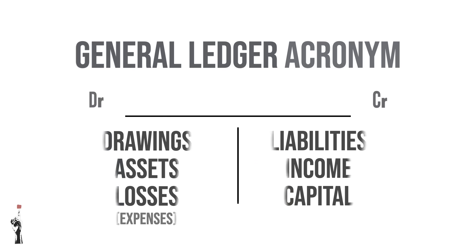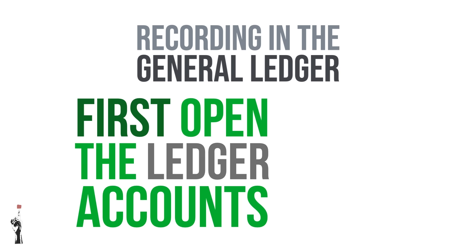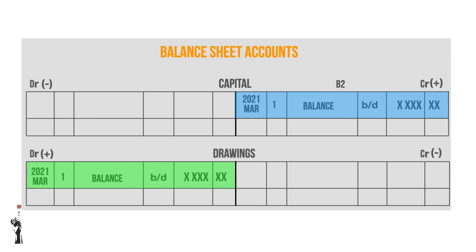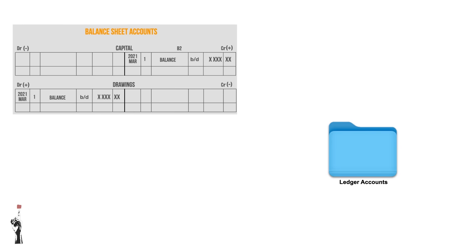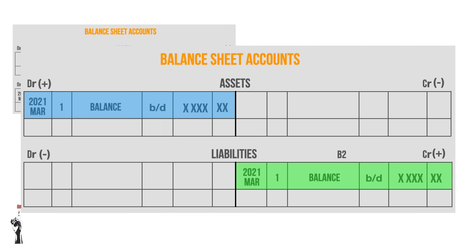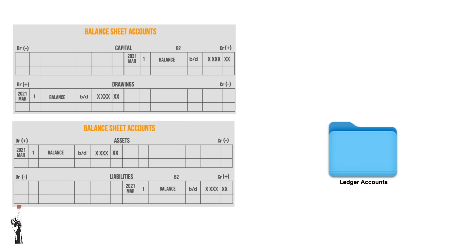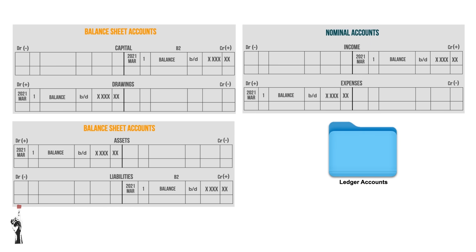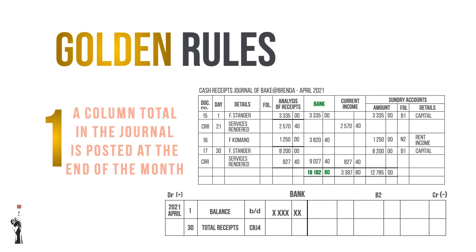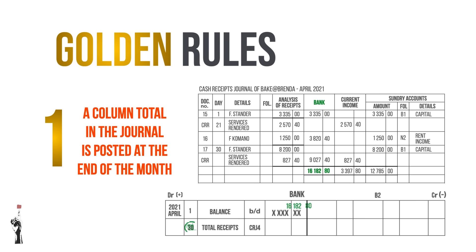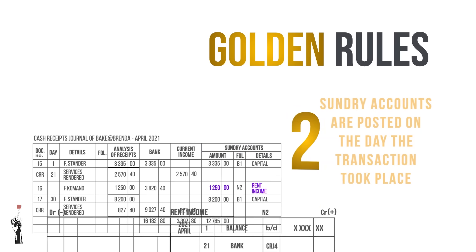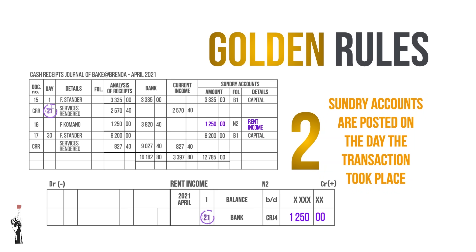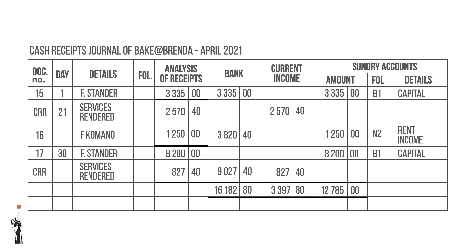Let's get more practical. The first thing we do when recording in the general ledger is to open the ledger accounts. The two golden rules are: if it is a column total in the journal, you post the total at the end of the month — meaning on the last day of the month. If it is a sundry account, you post the amount on the day the transaction took place. We will record the capital transactions that took place on the 1st and 30th of April, and these two capital transactions should be recorded separately, done chronologically.